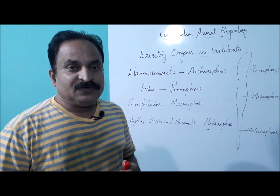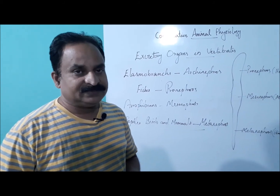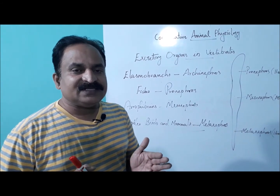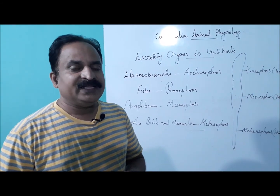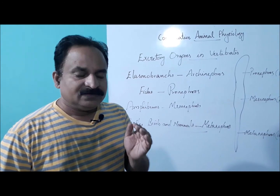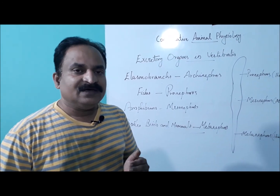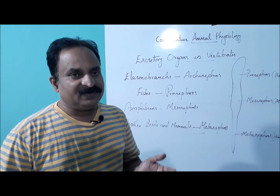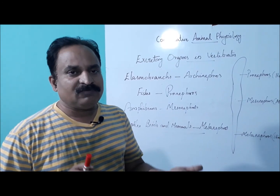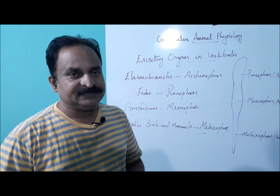In the last video, we discussed about excretory organs in invertebrates. In invertebrates, the excretory system is very simple and the mechanism is simple diffusion. The diffusion of nitrogenous material from the body of the organism into the environment directly — that means into the aquatic medium — takes place in invertebrates.